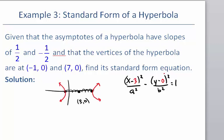The next thing I need to do is determine the a and the b value. The a value is the distance between the center and the vertex, and we've already determined that that's equal to 4. Counting from the center to the vertex: 1, 2, 3, 4 — the distance is 4. So I'm going to plug that in for my a value.